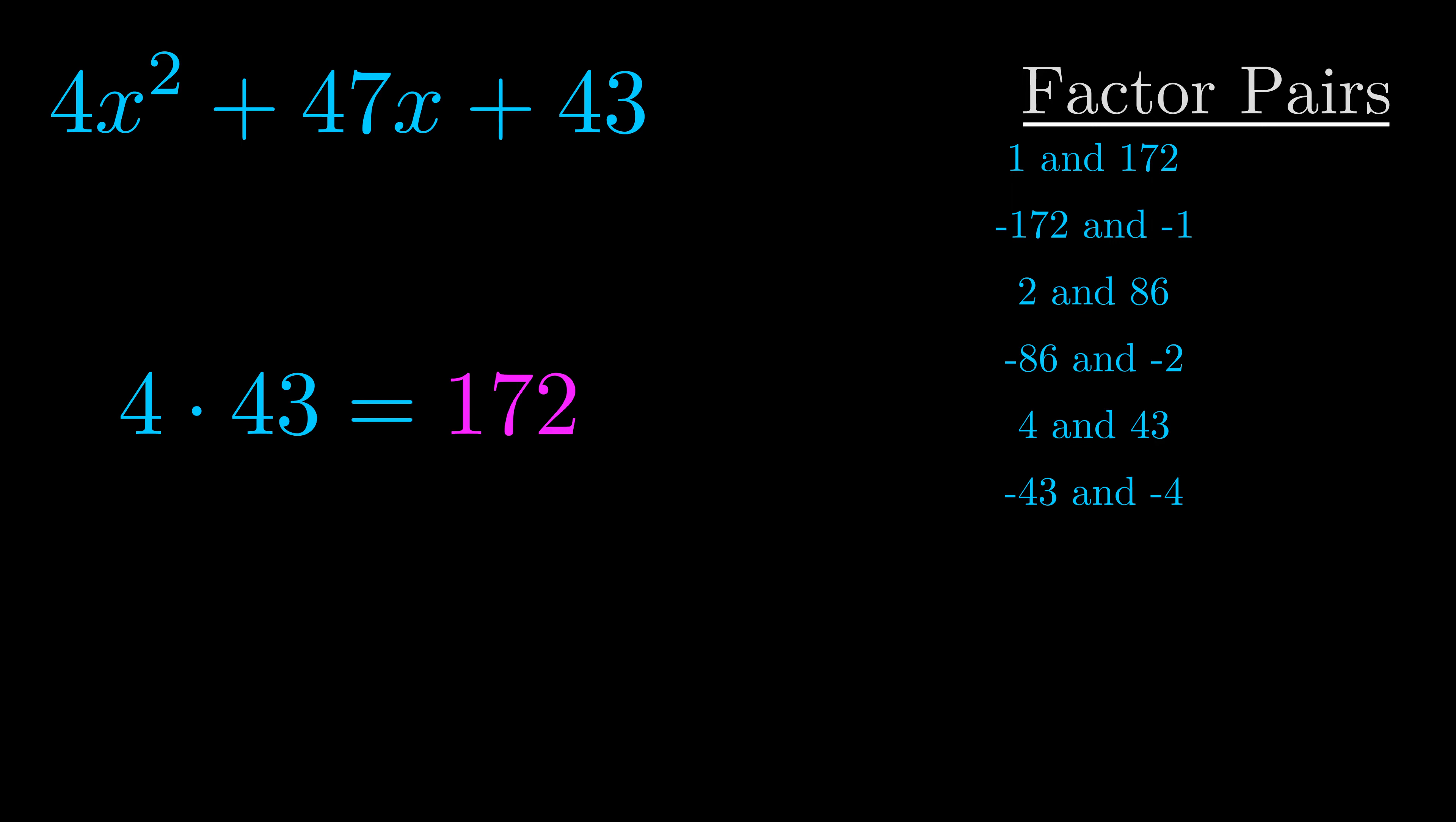The b value is the coefficient on the x term. That's the middle term, the one that we haven't done anything with yet. And really this is the only factor pair that we need.